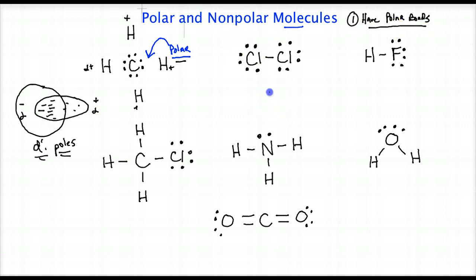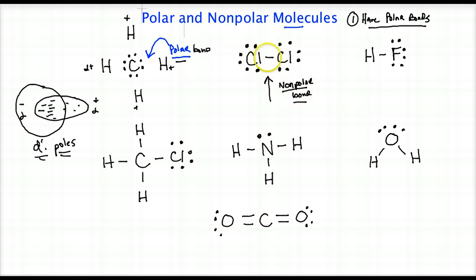If you look at this molecule right here, we talked in a previous lecture about it having a nonpolar covalent bond. This compound, because it only has one bond and it's nonpolar, has an equal distribution of electrons because of the nonpolar bond sharing equally. So this doesn't have a polar bond. This molecule is therefore a nonpolar molecule, and the reasoning is it doesn't have any polar bonds — there is no negative side, no positive side.